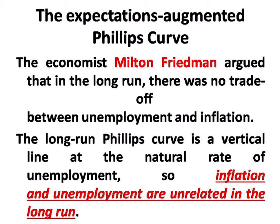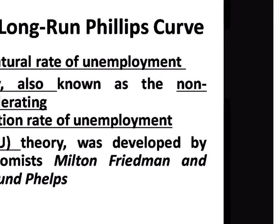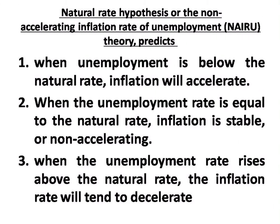The long-run Phillips Curve is always vertical at the natural rate of unemployment, meaning inflation and unemployment are unrelated in the long run. This natural rate of unemployment theory is also called the Non-Accelerating Inflation Rate of Unemployment, or NAIRU, developed by Milton Friedman. If unemployment falls below the natural rate, inflation will accelerate.